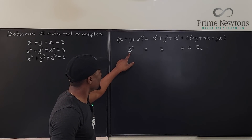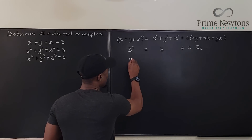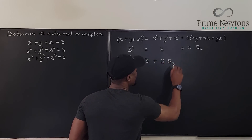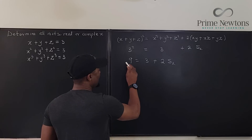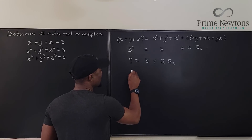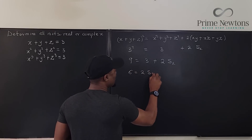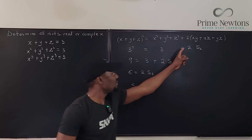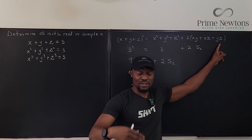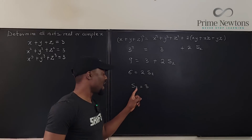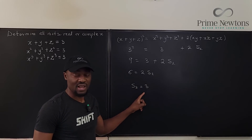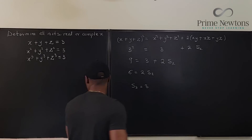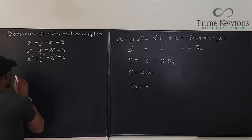From 9 = 3 + 2·S2, we get 6 = 2·S2, so S2 = 3. Whenever we see the pairwise product sum as we proceed, we recognize it equals 3 and don't need to simplify further.